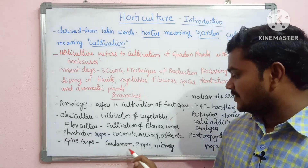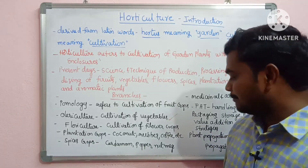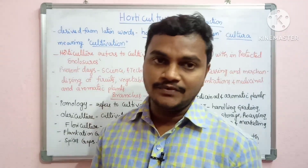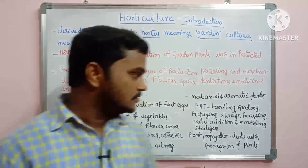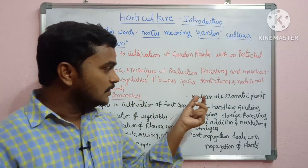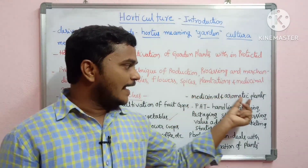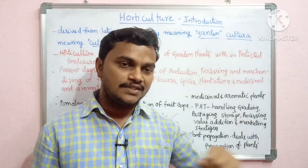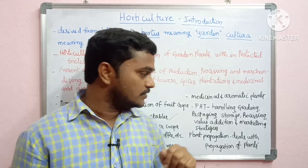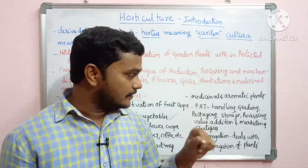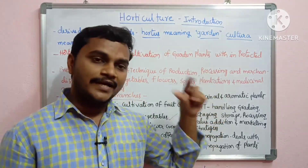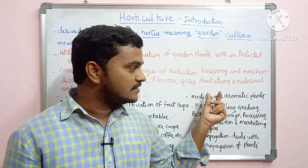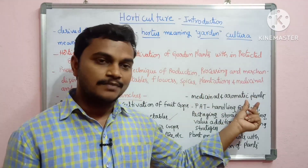Spices crops include cardamom, pepper, and nutmeg. Medicinal and aromatic plants are also a branch of horticulture, covering plants used in preparation of medicines and aromatic components.